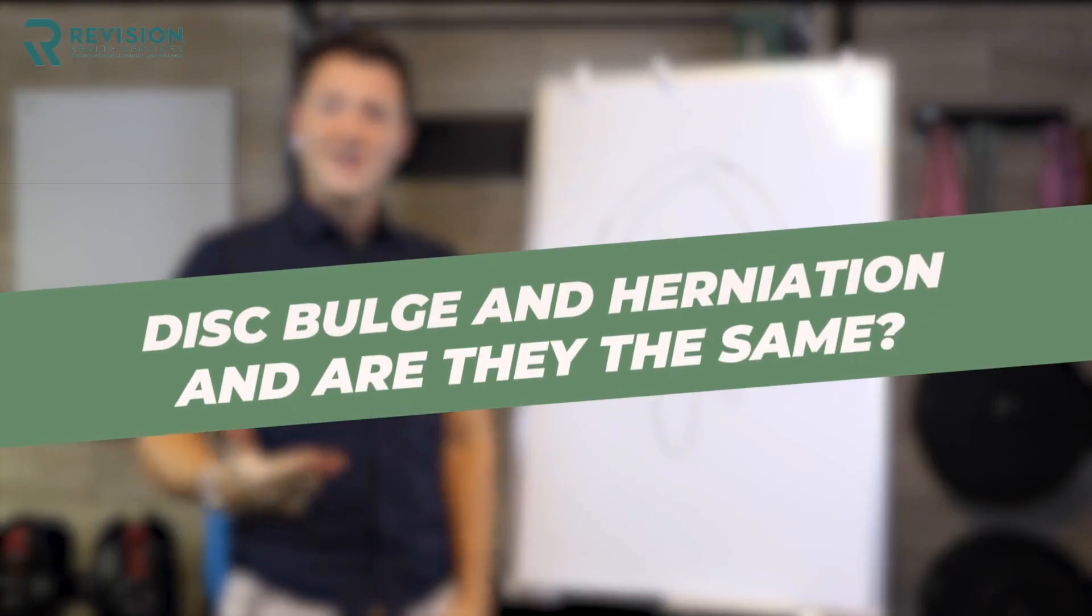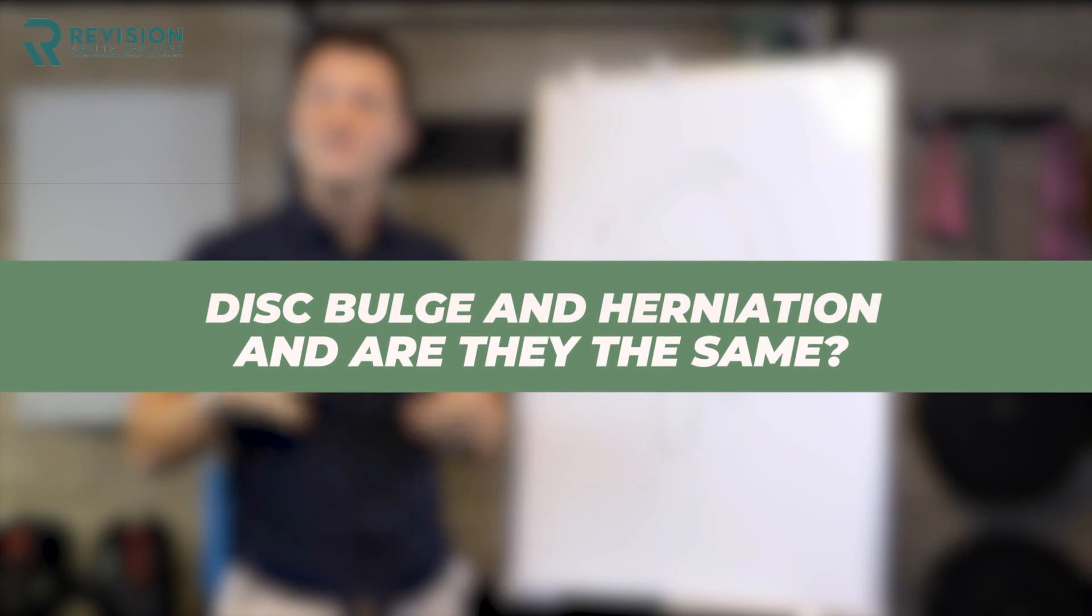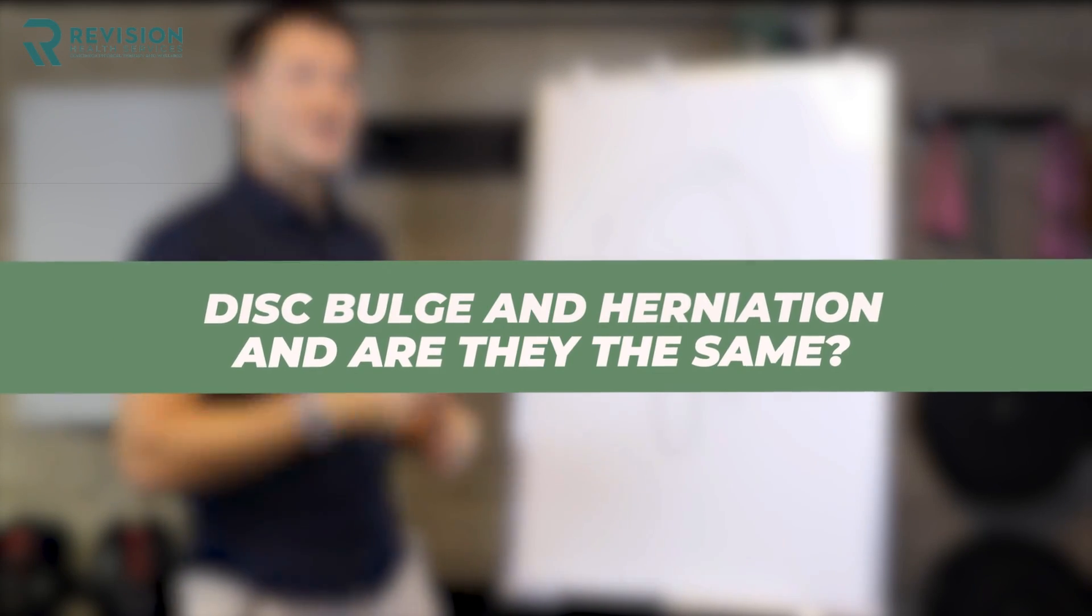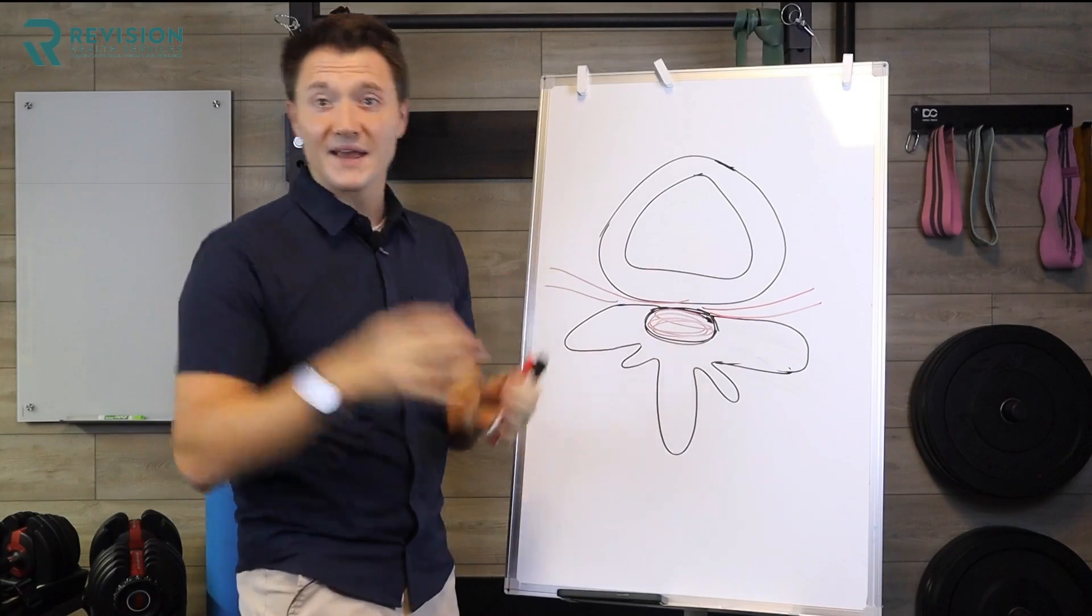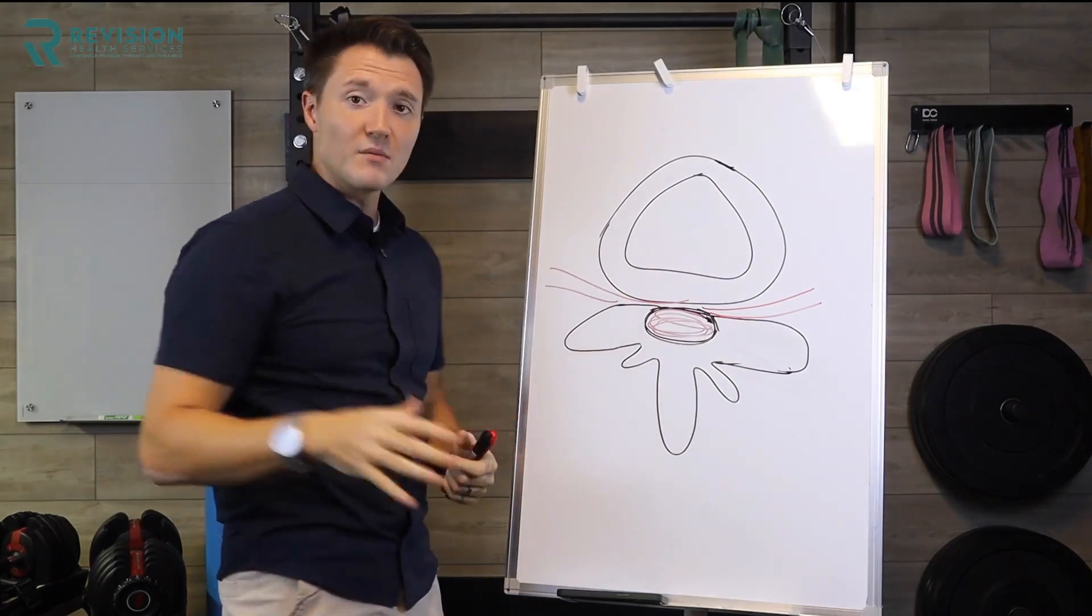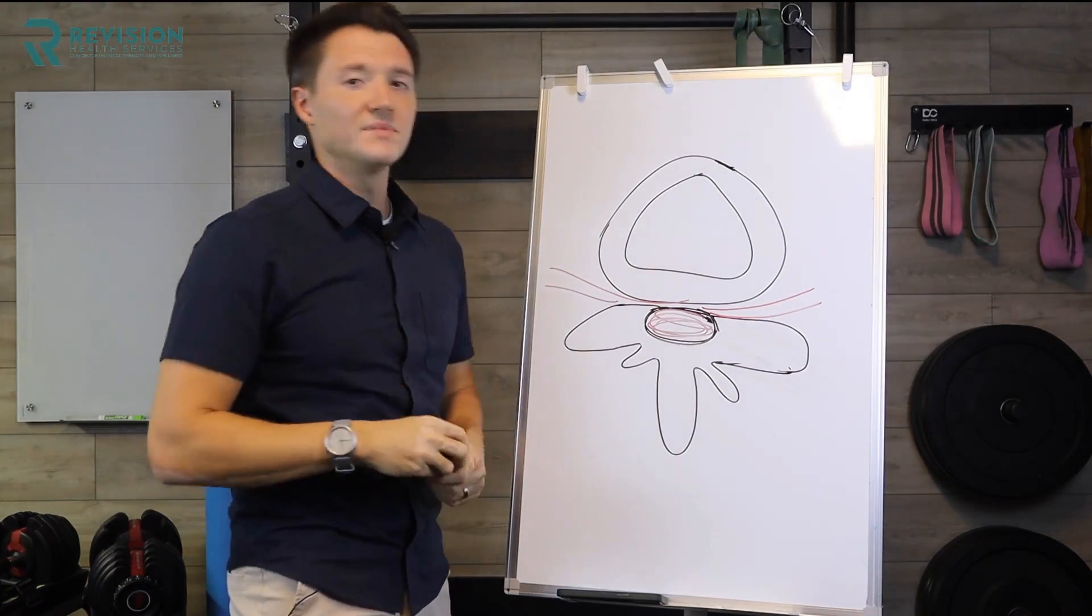Okay, so we're going to talk about disc bulge and herniation, and are they the same thing? And if not, what makes them different? So let's get started here. So this is your back. This is me looking down at you. If I were to do an MRI, this is what we call the top-down view.